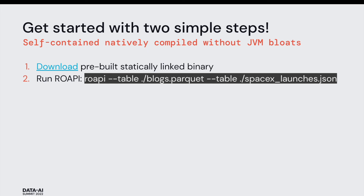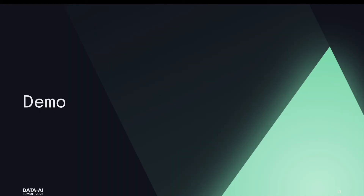Getting started with ROAPI is pretty simple. It's all written in Rust, so everything is statically compiled into a single binary. There's no JVM to set up, no Python-based libraries to configure. Step one: download the binary. Step two: run it. It cannot be simpler than this. I really recommend you give it a try and see if it fits your use cases. I'd like to give a quick demo of what it feels like to interact with ROAPI through its diverse set of query interfaces.